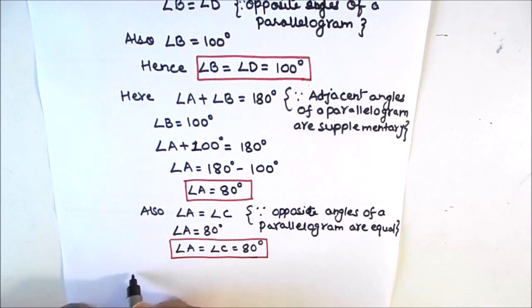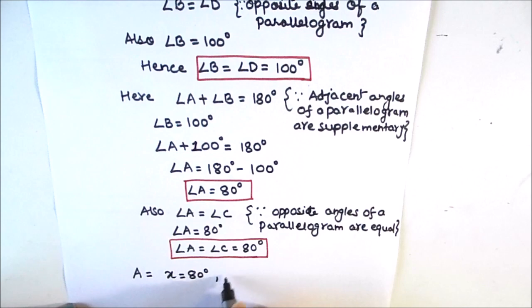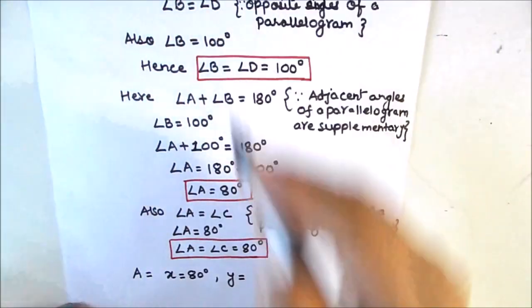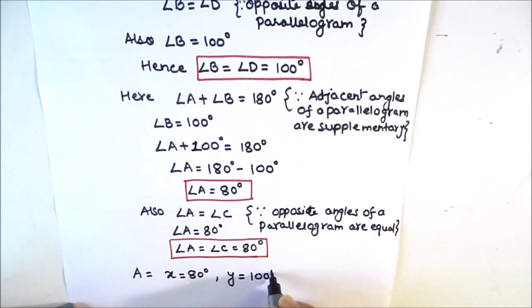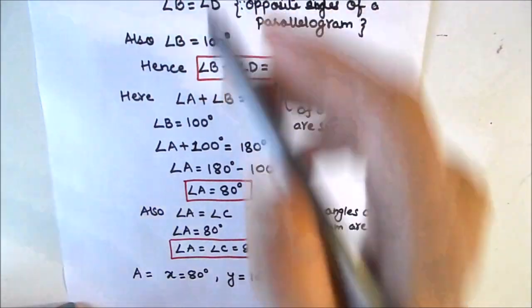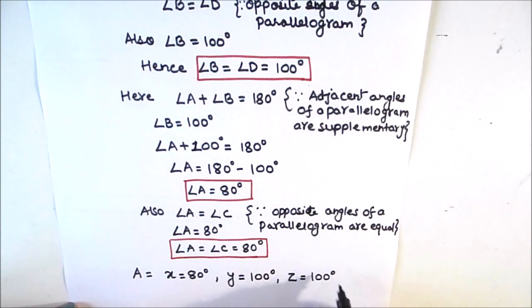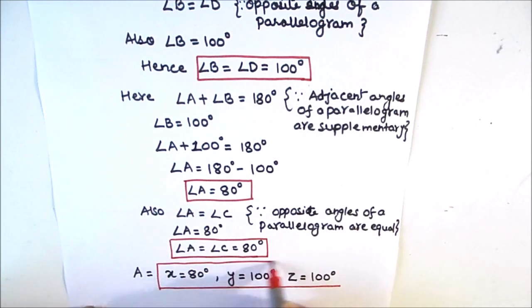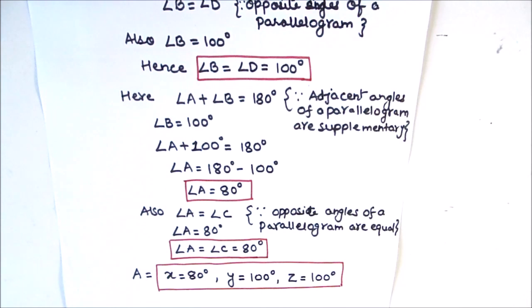So our final answer will be: x, which is equal to angle C, is 80 degrees; y, which is equal to angle D, is 100 degrees; and z, which is equal to angle A, is 100 degrees. We got the values of x, y, and z as 80, 100, and 100 degrees respectively. This is how we find the value of unknown angles in a parallelogram when only one angle is given. I hope this video is helpful. If you like the video, please hit the like button and subscribe to my channel for more math videos. Thanks for watching.